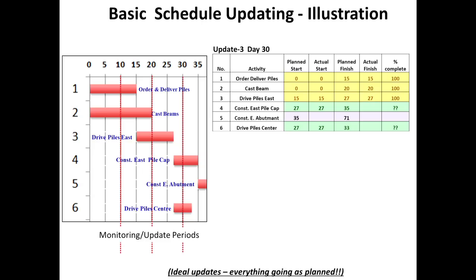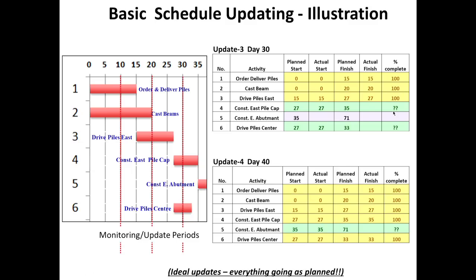This is just an illustration of what a basic update could be, and the key here is to focus on: the key update information is the percentage complete of activities that are in progress — how do I actually get that done? The same thing continues at update 3 on day 30. By day 30, the first three activities are over; east pile cap and center pile need updates, and east abutment has not yet started. When I go to day 40, all activities except east abutment have been completed as per plan, and I still need to know how much progress was made on east abutment.